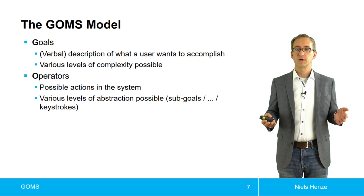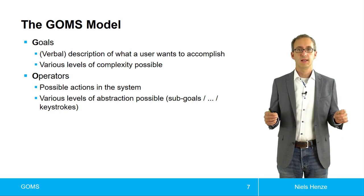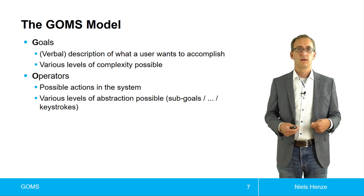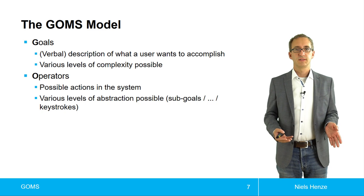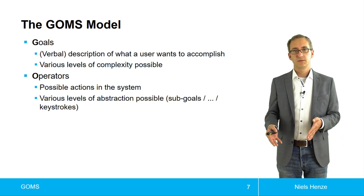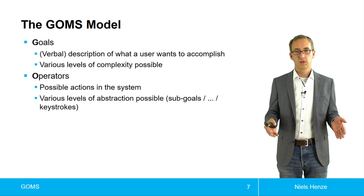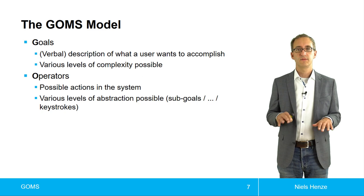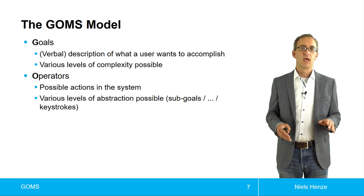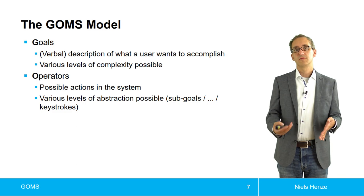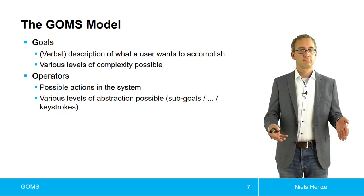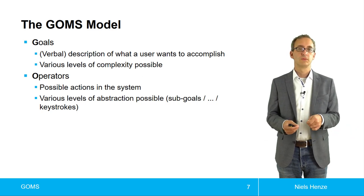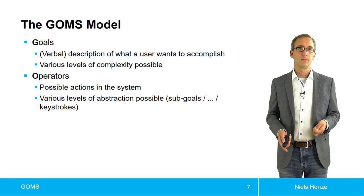Then there are operators. And for KLM, we already saw that. So for KLM, there are operators such as pressing a key or pressing a mouse button. These are possible actions in the system. But in contrast to KLM, the general GOMS model has no predefined list of operators. So these operators can have different levels of abstractions. Things like entering a pin consists of multiple keystrokes. And we could consider entering a pin one operator. But we also could drill it down to the different keystrokes and use them as operators.